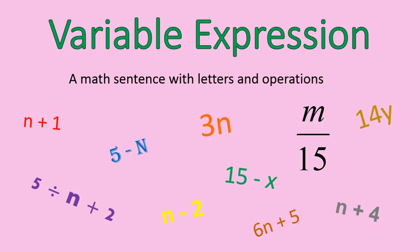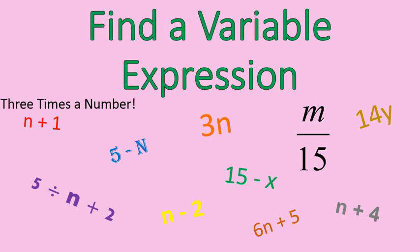Now we're going to play a bit of a game where you try to find a variable expression. I'll give you a sentence, and I want you to find which one represents what I'm asking. Here it is: three times a number. Which of these variable expressions represents three times a number? Were you able to pick out 3n? When a number and a letter are written right next to each other, it means that they're being multiplied.